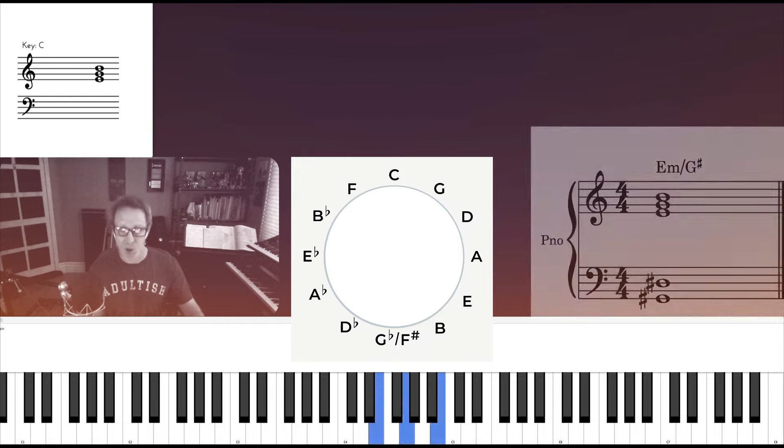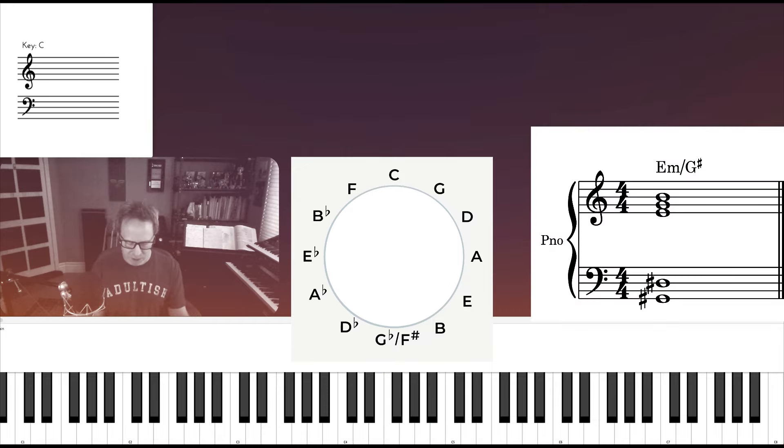Next, we'll take this E minor over G sharp 5 and we'll put it in C, which would be C minor over E5. We're going to take it through the ascending augmented cycle with voice leading.